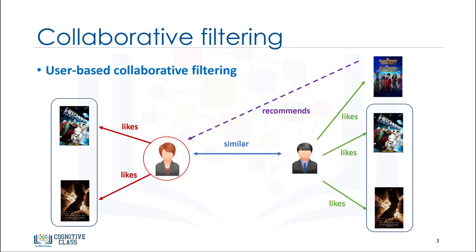For instance, if two users are similar, or are neighbors, in terms of their interest in movies, we can recommend a movie to the active user that her neighbor has already seen. Now let's dive into the algorithm to see how all of this works.